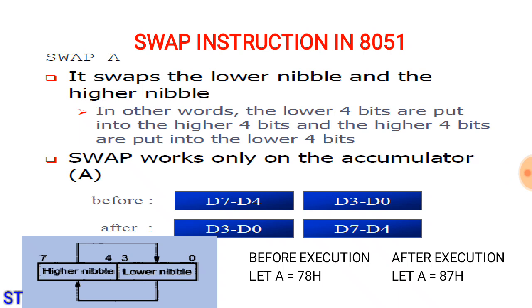In other words, after execution of this instruction, the lower order 4 bits in the accumulator register become the higher order 4 bits. The higher order 4 bits become the lower order 4 bits. This instruction works only on the accumulator A register.